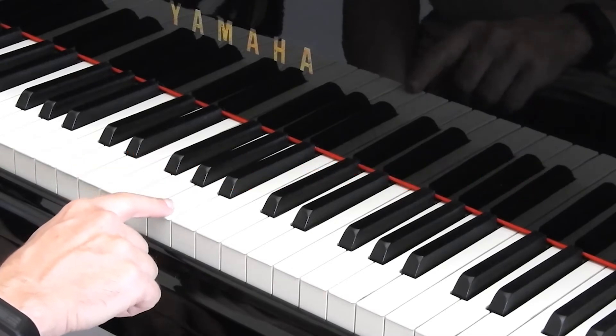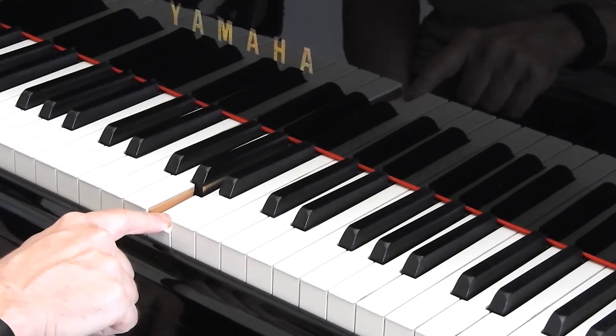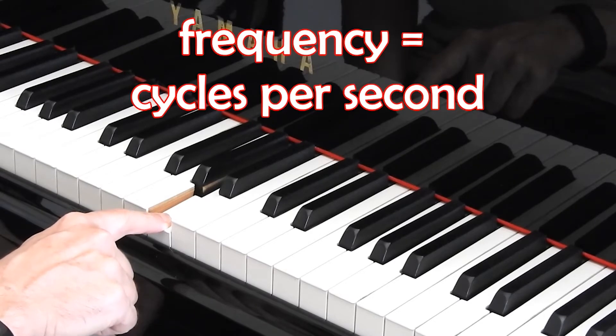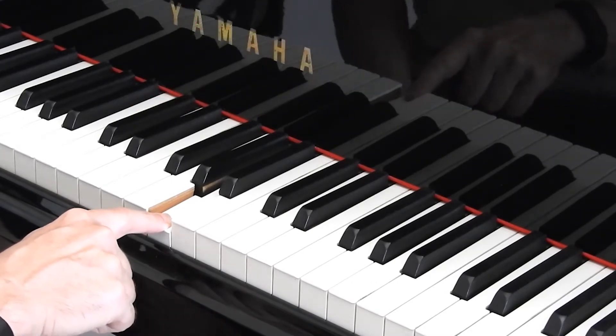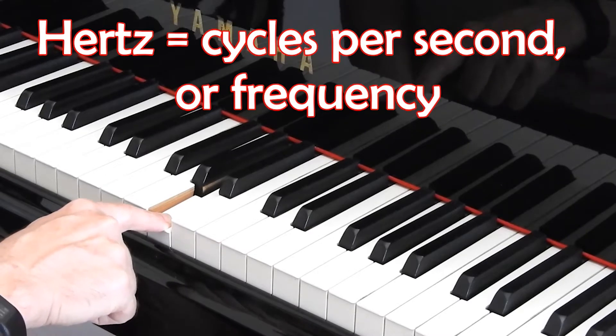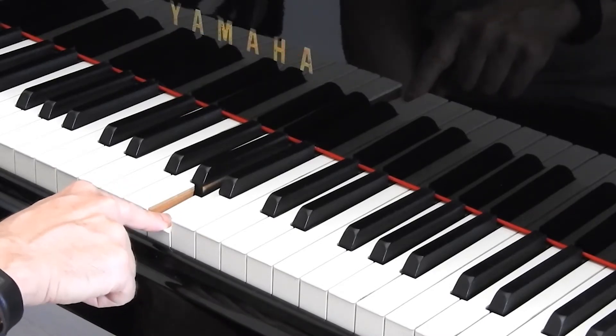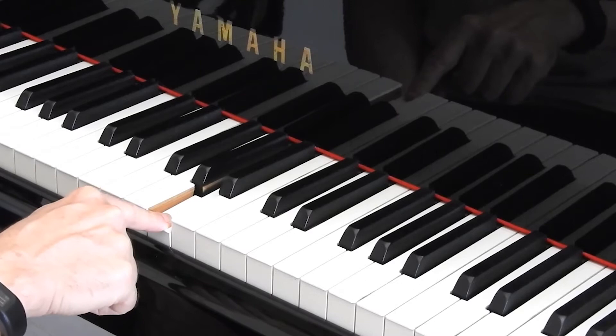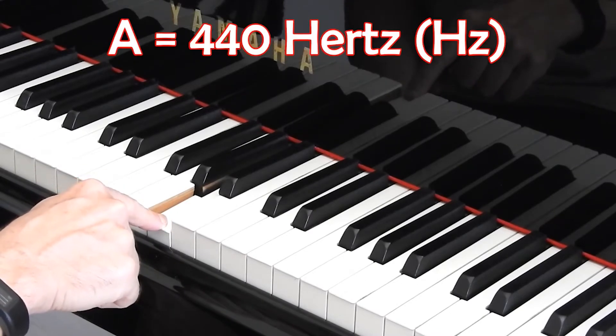If I press a note on this piano, this is an A. And if you looked at the frequency, how many cycles per second, how many vibrations in a second this note makes, it's 440. And the term that we use is called Hertz, H-E-R-T-Z, named after a German physicist. Hertz is cycles per second, so that's 440 cycles per second.